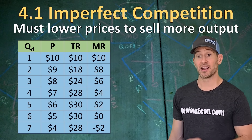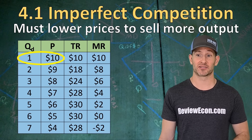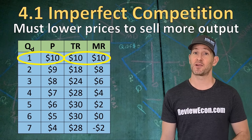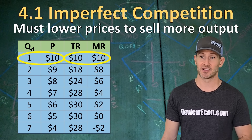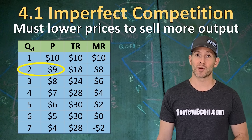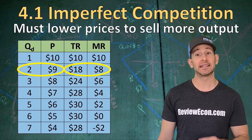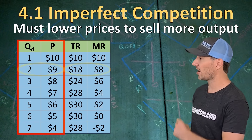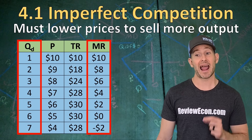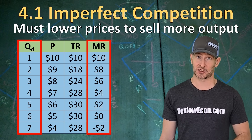We see that in this chart. As the firm produces only one unit of output, they can sell it for a high price of $10. That gives us a total revenue of $10 and a marginal revenue of $10. But if they want to sell more units of output, they have to lower the price. Lowering the price down to $9, they get to sell one more unit, but their total revenue increases by only $8. That means the marginal revenue is lower than the demand. Those first two columns are the demand curve, but the marginal revenue curve falls below the demand as a result of having to lower prices as they produce more output.